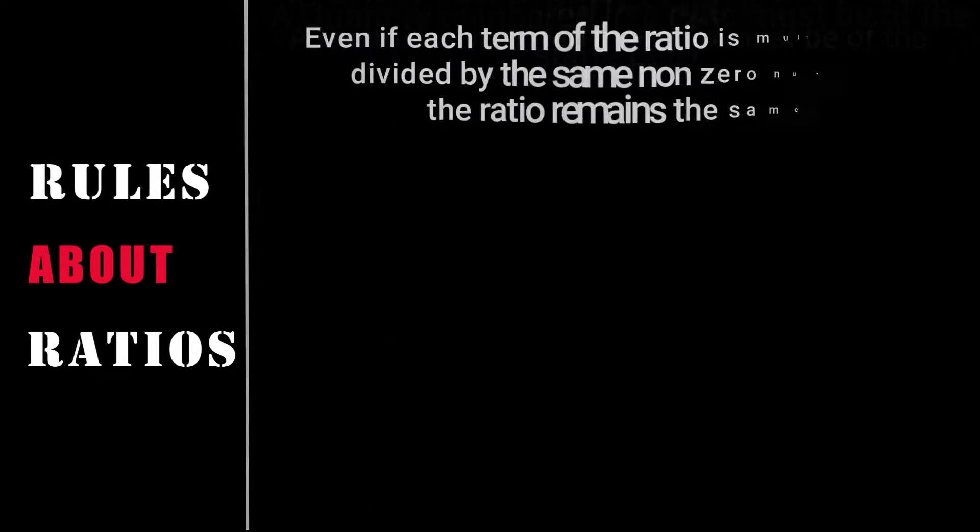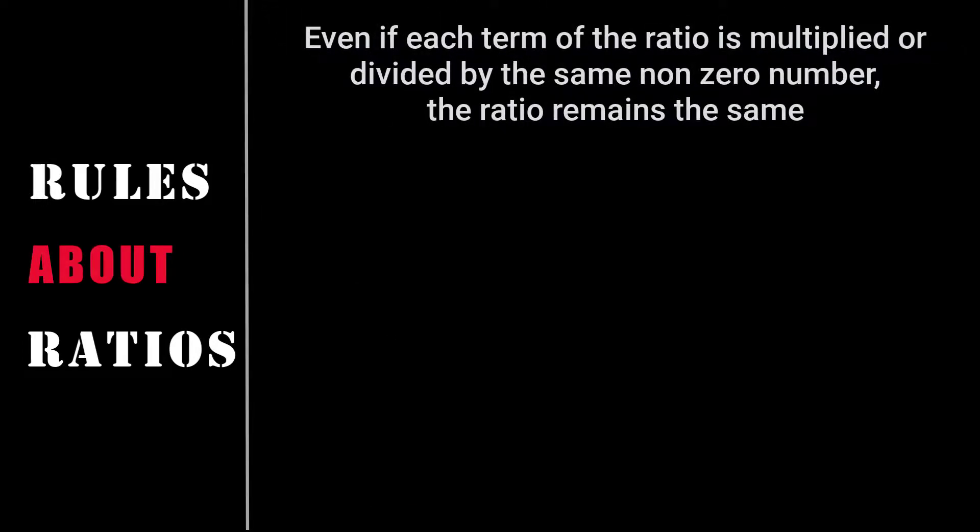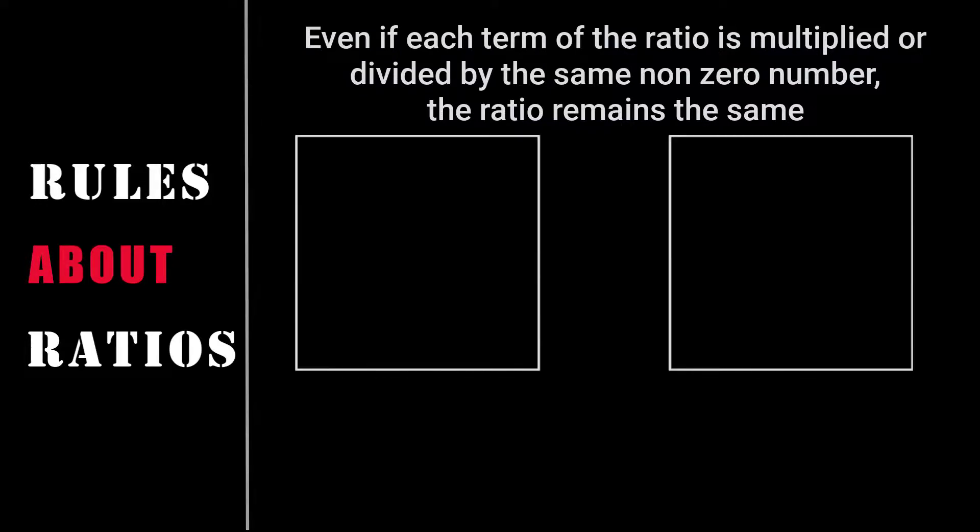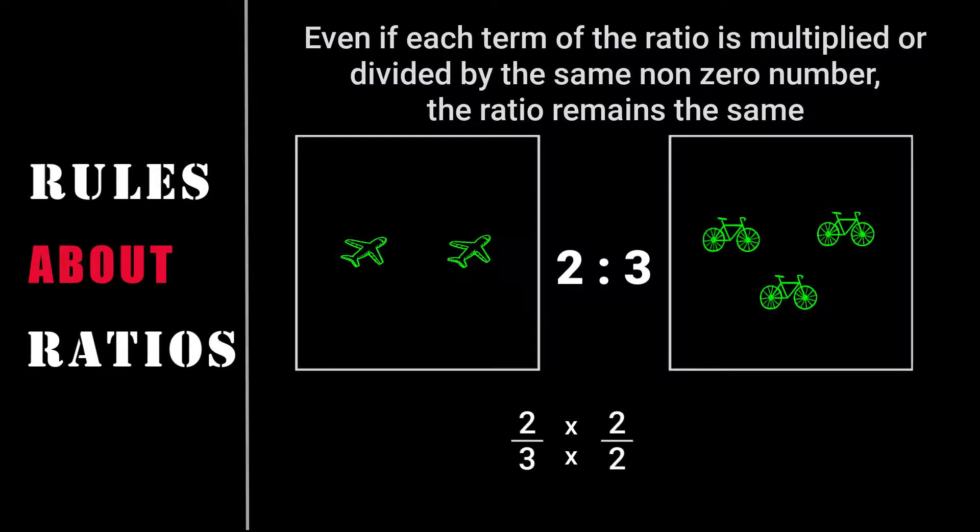Rule number 4: Each term of the ratio remains the same when multiplied or divided by a non-zero number. The figure shows two aeroplanes and three cycles. Now if we multiply both the numerator and the denominator by 2, what happens to their quantity? Their quantity doubles.